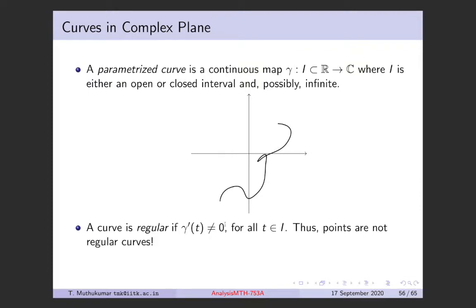You also have curves where gamma prime of t is zero — these are called irregular curves. For example, y equal to x times the cube root of x squared will have a cusp at the origin, so gamma prime of zero for that curve will be zero. The tangent becomes infinity and shifts from plus infinity to minus infinity, so there is a jump in the tangent vector — it doesn't move smoothly.